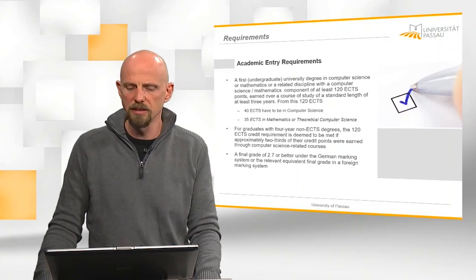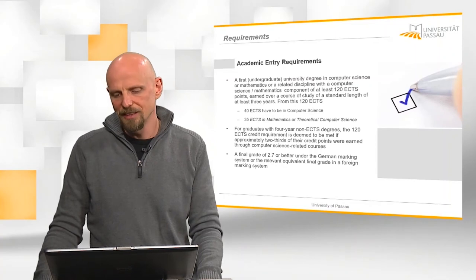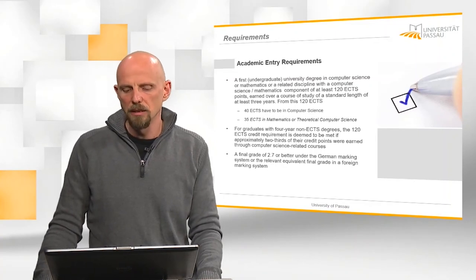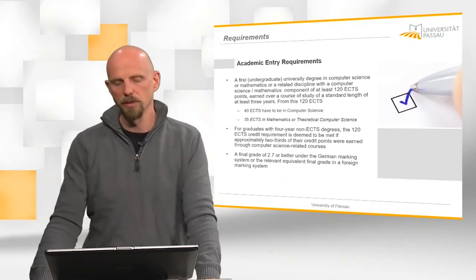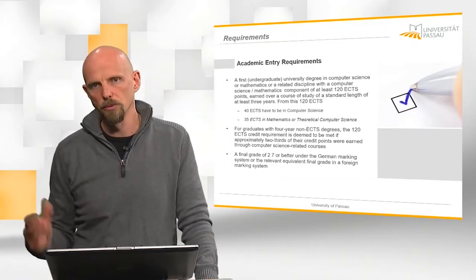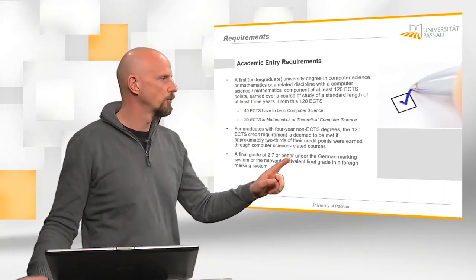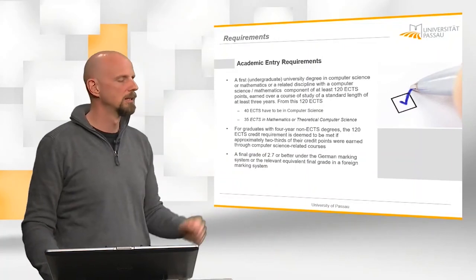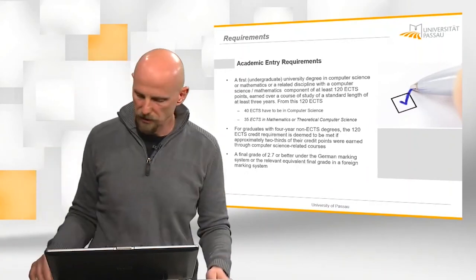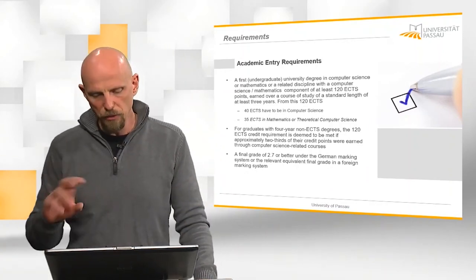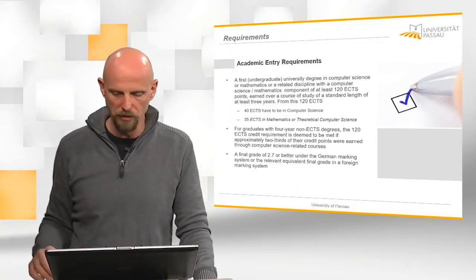If you have completed a four-year non-ECTS degree, then the 120 ECTS requirements are deemed to be met if approximately two-thirds of the credit points were earned through computer science related courses. Also, you need to have a final grade of 2.7, that's here, or better under the German marking systems. There are certain equations one can use to convert international grades into that marking system.